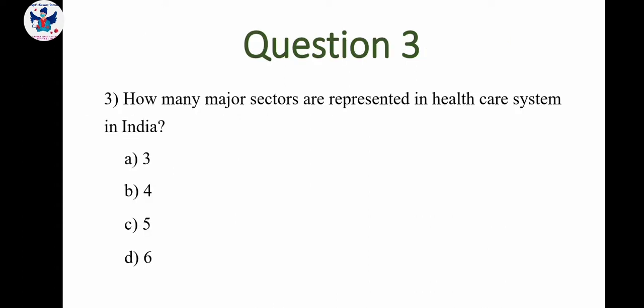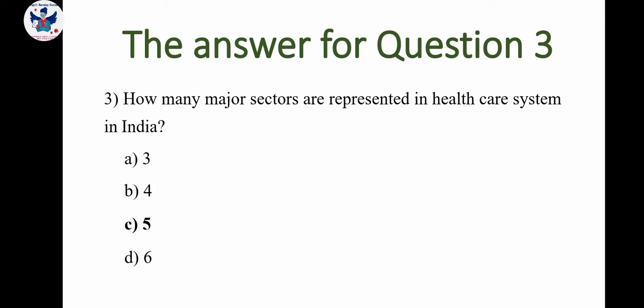Next question: How many major sectors are represented in the healthcare system in India? A: 3, B: 4, C: 5, D: 6. The correct answer is option C, 5. There are 5 major sectors represented in the healthcare system in India.